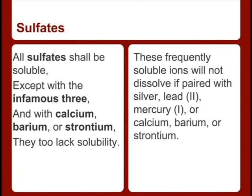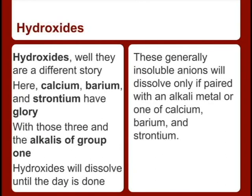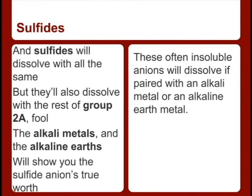Most sulfates shall be soluble, except with the infamous 3, and with calcium, barium, or strontium — they reduce solubility. Hydroxides are a different story: calcium, barium, and strontium have glory, along with those alkalies of Group 1 — hydroxides will dissolve until the day is done. And sulfites will dissolve with all the same, but they'll also dissolve with the rest of Group 2 — the alkaline metals and the alkaline earths will show you the sulfite anion's true world.